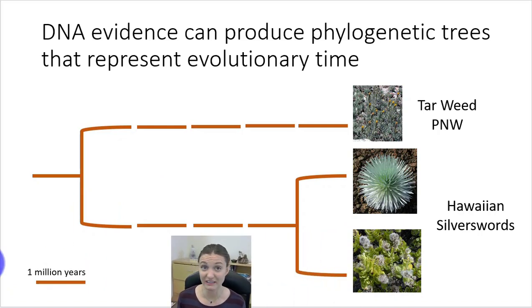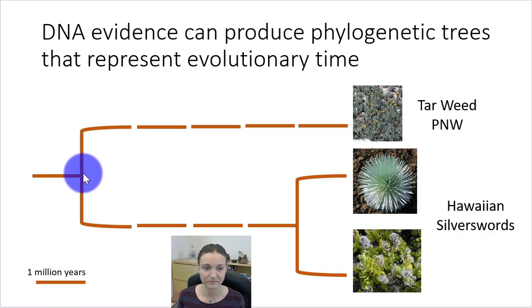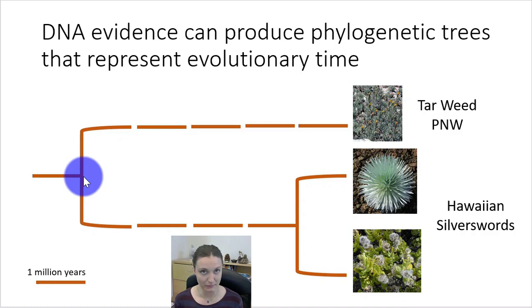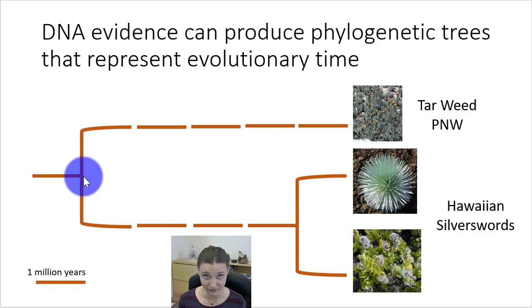We can also use a tool called a molecular clock to scale trees based on time — to estimate when traits arose and when lineages split. A molecular clock works by estimating the average mutation rate of a gene. By looking at differences in DNA sequences and the resulting protein sequences, we can calculate how often mutations arise on average, infer the sequence in which mutations arose, and use that information to estimate when species may have split and when they last shared a common ancestor.